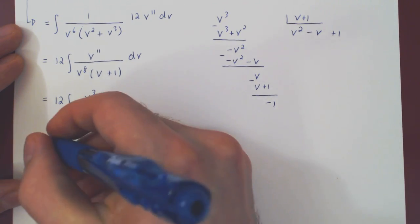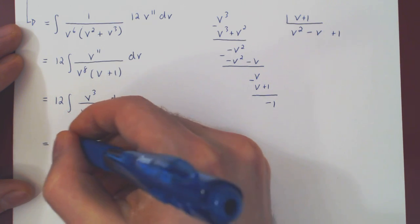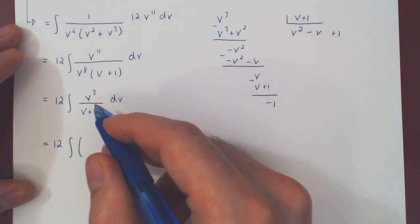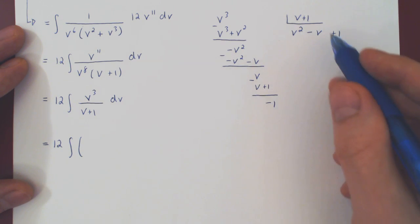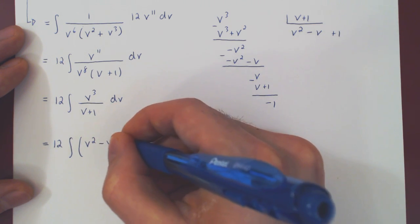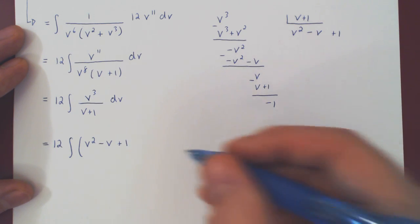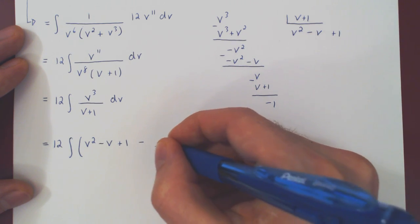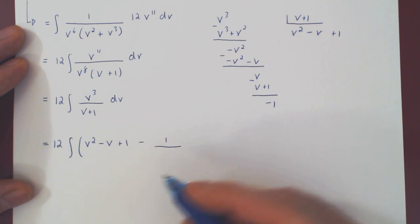And so the end result will be the integral of v cubed over v plus one is its quotient, plus the remainder minus one over the divisor v plus one.